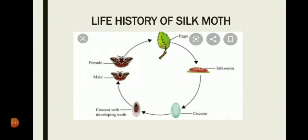The liquid silk comes in contact with air, solidifies, and becomes a silk fiber or silk thread. The silkworm then covers itself completely with this silk fiber. The covering spun by the silkworm of a silk moth is known as a cocoon — it is white in color. The cocoon is made by the silkworm to protect its development as pupa. Inside the cocoon, the pupa lives. Pupa is the stage in the life history of a silk moth when the caterpillar becomes encased in a hard shell of silk fiber.